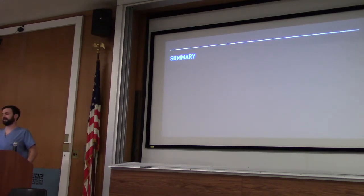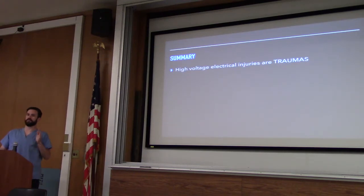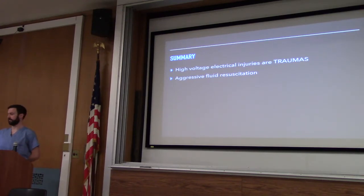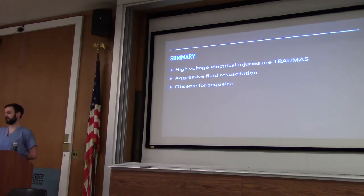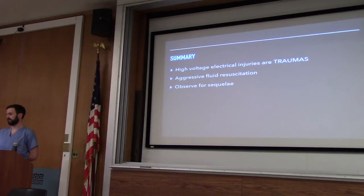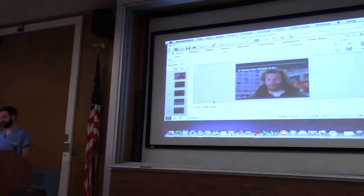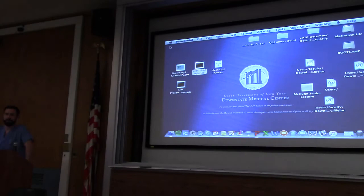The main points: high voltage electrical injuries are traumas — they'll come in and you'll be working them up for everything, imaging everything. Just remember they're more burn patients than anything else, and you need to aggressively fluid-resuscitate them for the risk of rhabdo. For low voltage, do an EKG — if they have an arrhythmia or lost consciousness, you need to observe them. And for lightning, if the person looks dead, that's the person you go to first with reverse triage. That's it.